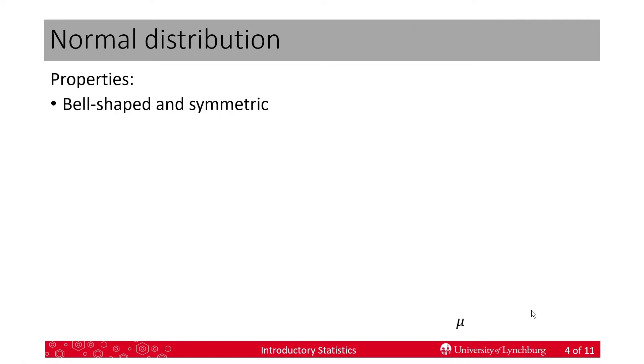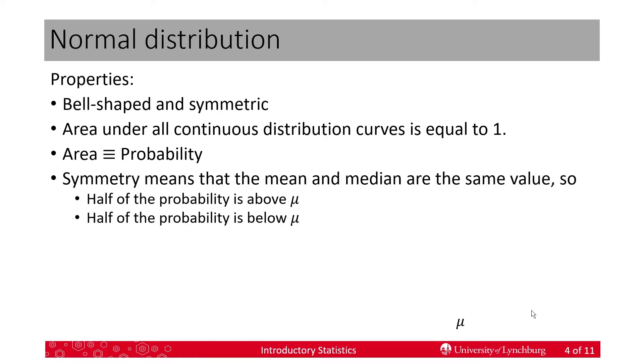The normal distribution has several properties. The first is that it's bell-shaped and it's symmetric. And we'll talk about symmetry in a minute. Area under the continuous distribution curves, including the normal, the total area is equal to 1. And again, area and probability are interchangeable. They mean the same thing when we're talking about continuous probability distributions.